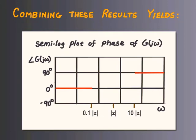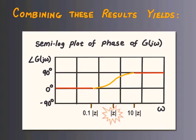We can also do the same sort of analysis for the phase curve. The phase at very low frequencies was approximately 0, although slightly positive, and for very high frequencies it was 90 degrees. There is a transition region between these two, occurring over plus and minus one decade around the frequency absolute value of z. This is the phase change introduced by a zero in the left half plane: an increase of 90 degrees, taking place between plus and minus one decade of the absolute value of z.